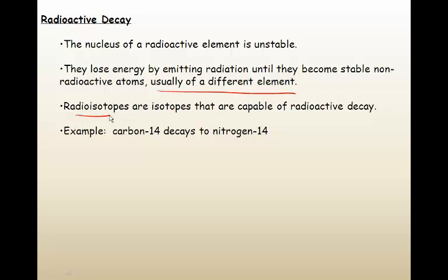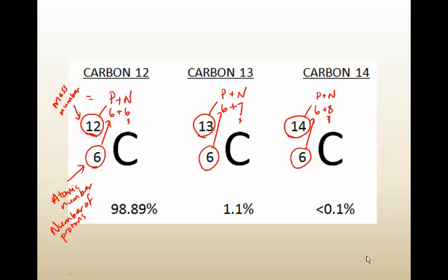Radioisotopes are isotopes that are capable of radioactive decay. So if you think back to the three forms of carbon, carbon-12, carbon-13, and carbon-14, carbon-14 actually is an unstable form of carbon. It has an unstable nucleus, and it decays to nitrogen-14, meaning that it actually changes to the element nitrogen. Our bodies contain all three different forms of carbon, but only one atom in one trillion is of the unstable form that can release radiation.